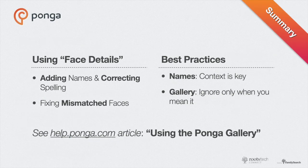To wrap up, I started this tip with a review of how to use the Face Details page to make two kinds of corrections to face naming problems: correcting a name and fixing mismatched names. I also walked through some best practices for names themselves and applying those names in the gallery — specifically when to use the add name, skip, and ignore buttons.